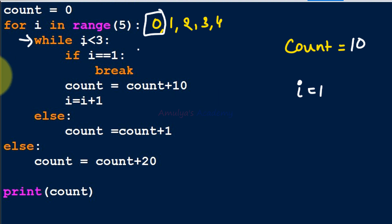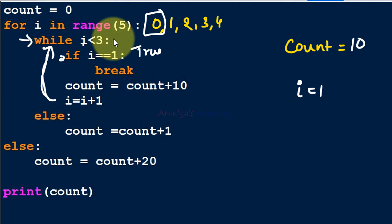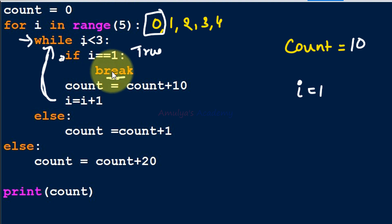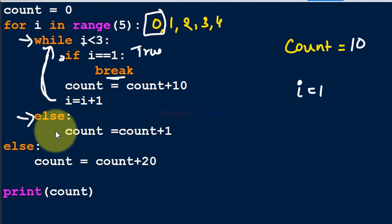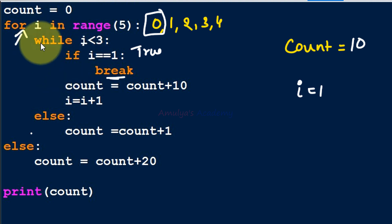Again control goes to the while loop and checks i < 3: 1 < 3 is true. We check if i == 1 — yes, 1 == 1 — so the break statement executes. Break terminates the while loop and control moves to the while's else block, but because the while loop was terminated by break, the else part is not executed. Control then returns to the for loop.